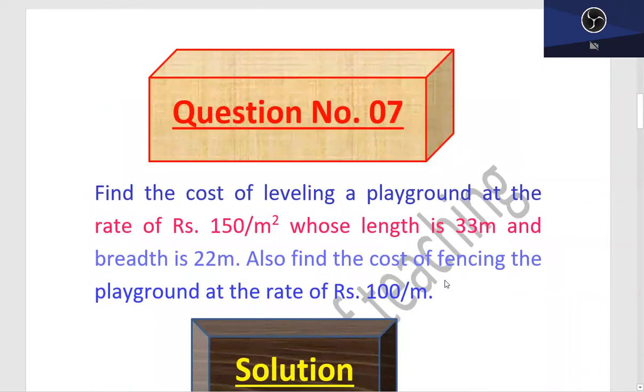Question number seven: Find the cost of leveling a playground at the rate of rupees 150 per meter square whose length is 33 meter and breadth is 22 meter. Also find the cost of fencing the playground at the rate of rupees 100 per meter.